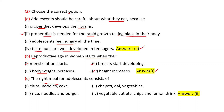Next MCQ: The right meal for adolescence consists of — chips, noodles, coke; chapati, dal, vegetables; rice, noodles and burger; vegetable cutlets, chips and lemon drink. Correct answer is the second one: chapati, dal, and vegetables.